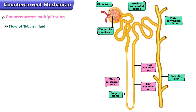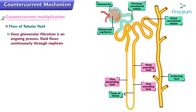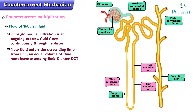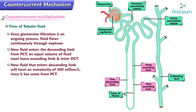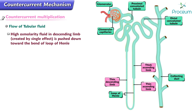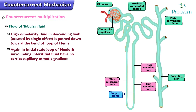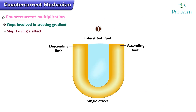Regarding the flow of tubular fluid: since glomerular filtration is an ongoing process, fluid flows continuously through the nephron. As new fluid enters the descending limb from the proximal tubule, an equal volume of fluid must leave the ascending limb and enter the distal tubule. The new fluid entering the descending limb will have an osmolarity of 300 milliosmoles per liter, having come from the proximal tubule. The high-osmolarity fluid in the descending limb created by the single effect is pushed down towards the bend of the loop of Henle. In the initial state, the loop of Henle and surrounding interstitial fluid have no corticopapillary osmotic gradient.